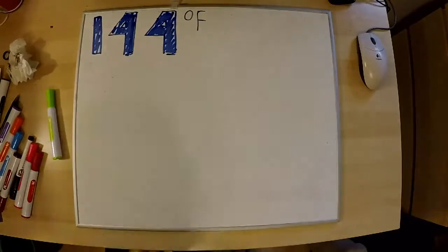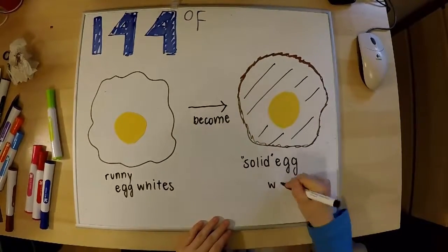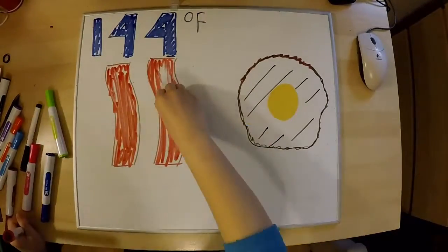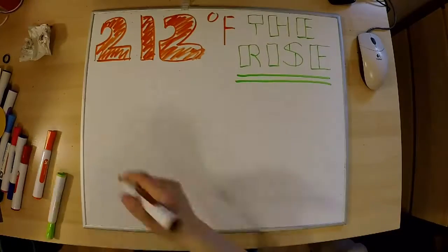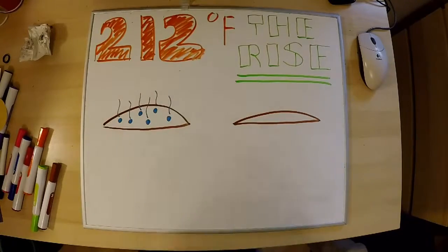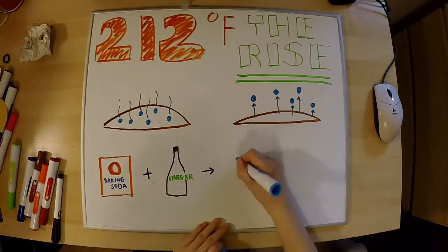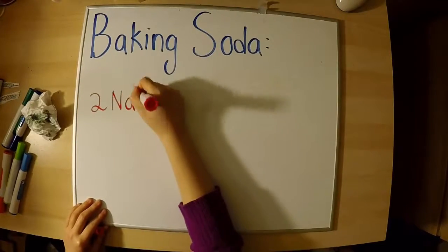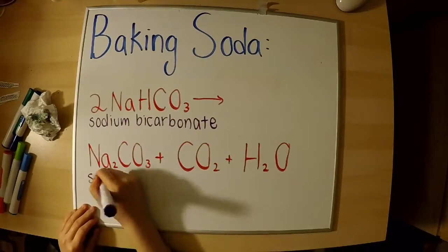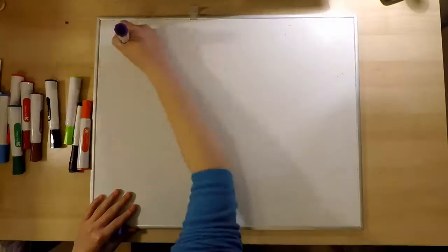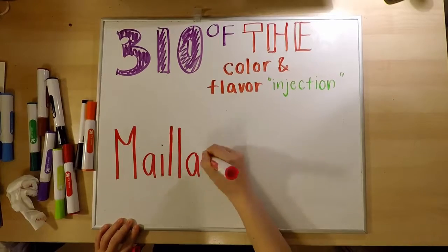At 144 degrees Fahrenheit, the proteins in the eggs start to change, which causes the eggs to coagulate — it goes from runny to semi-solid, like frying an egg that turns from a clear liquid to a white squishy substance. The rise takes place at 212 degrees Fahrenheit, when the water in the dough starts to boil away and stiffens the cookie. Carbon dioxide gas starts to form inside because of the chemical reaction with the baking soda. The chemical reaction is: 2NaHCO3 produces Na2CO3 plus carbon dioxide and water — sodium bicarbonate produces sodium carbonate plus carbon dioxide and water. At 310 degrees Fahrenheit, the color and flavor injection starts with the Maillard reaction.